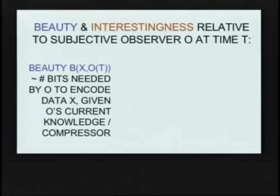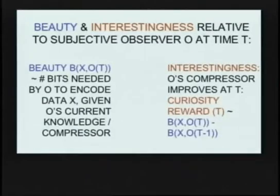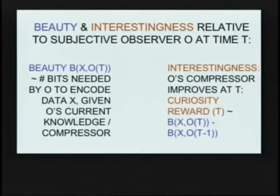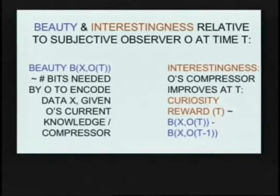Again, in discrete time — without derivatives — the simplicity, compressibility, or beauty of the data is the number of bits you need to encode it given what you already know. But the interestingness of the data is the change in the number of bits. So you get the data, you learn a little bit on it, which means you can now compress it a little bit better. The raw data is like that, the compressed data is like that. Then you improve the compressor — it learns something, becomes a better neural network that predicts the data — and now it takes fewer bits. What you save is your internal reward signal, because you have a novel pattern you didn't know yet. You can just subtract the number of bits needed before from the number of bits needed afterwards — and there you go. That's the reward signal.